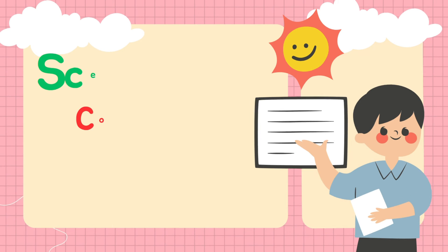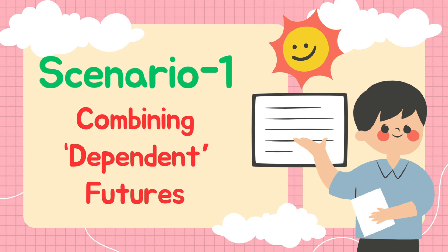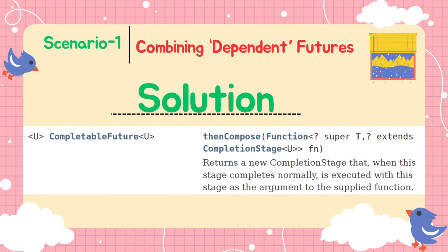Now let us start with our first scenario. Suppose there are multiple futures and they are dependent on each other. That means the second future's execution will depend on the result provided by the first future. For such scenarios, we can use the thenCompose functionality given in CompletableFuture. It will be called on one of the futures and then we have to provide a function which will return another CompletableFuture.